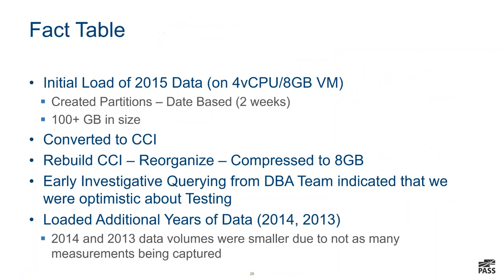We did our initial load when we still only had 4 virtual CPUs and 8 GB of RAM, but we quickly got that upgraded. We were able to load the data in a traditional row store format — we did not actually implement the column store index until after we got the data in. After we got it in, we converted it to a clustered column store index, rebuilt and reorganized it, and it got down to about 8 GB of space. So over 100 GB down to about 8 GB — that's better than 90% compression. And that's where the magic happens.